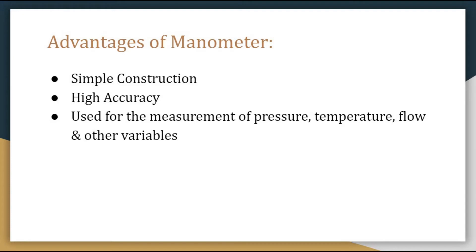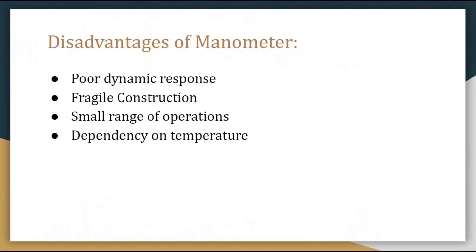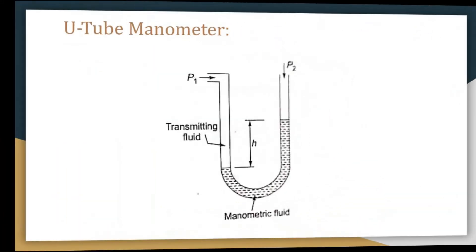The disadvantages of a manometer are: poor dynamic response, fragile construction and hence less portability, and a small range of operation of the order of about 1000 kilonewton per meter square. The final disadvantage is dependency on temperature — the manometric fluid density depends on temperature, and because of this, error may arise on account of temperature change. So if your device has temperature dependency, temperature fluctuations can prevent you from getting accurate readings.